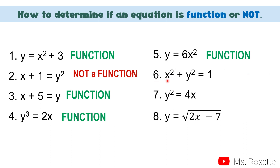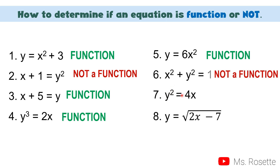Number 6: x² + y² = 1. Here y² has an exponent of 2, which is even — therefore this is not a function. Same with number 7: y is raised to 2, which is again an even number — therefore this is not a function.